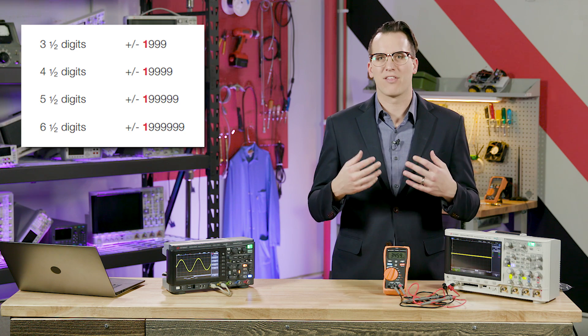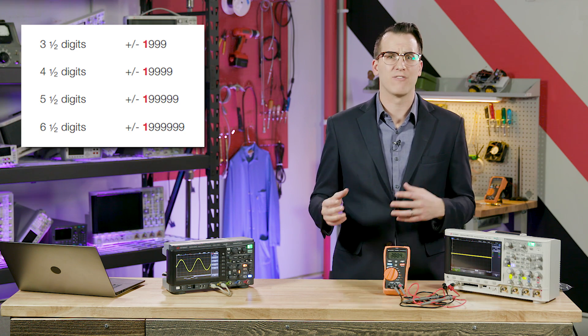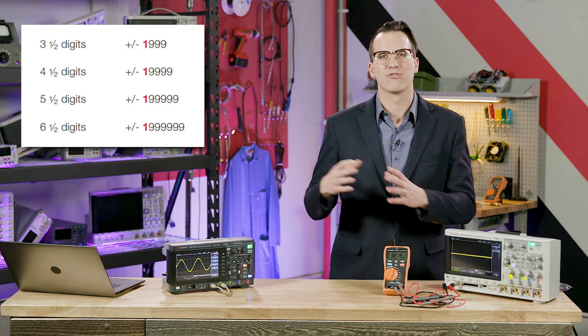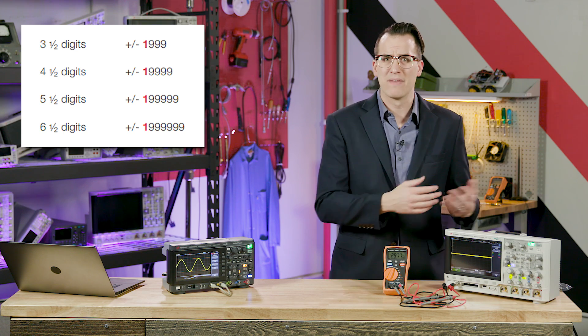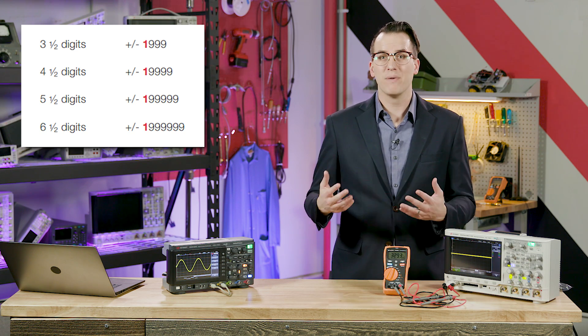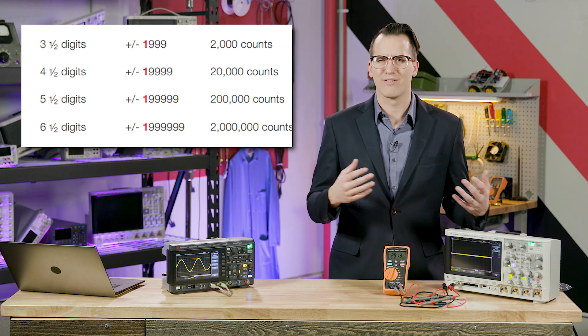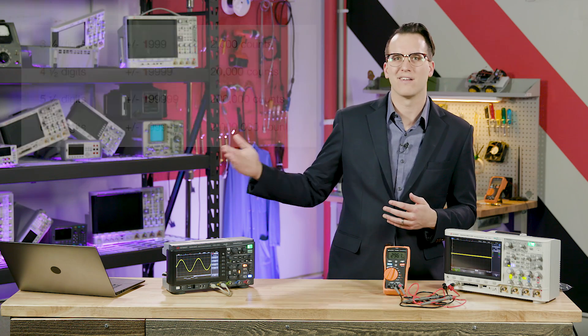So if we're talking about a 3.5-digit DMM like this one, the 0.5 refers to the first, most significant digit, and the 3 refers to the quantity of trailing digits. So the first digit can typically be 0 or 1, and the other three digits can be 0 through 9. This would mean that there are 2,000 possible states that the DMM can read, or 2,000 counts. It ranges from 0000 to 1999.